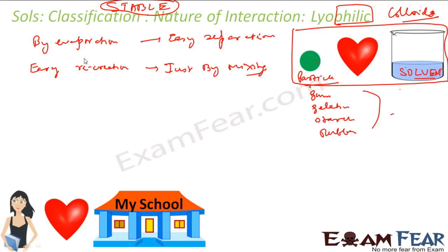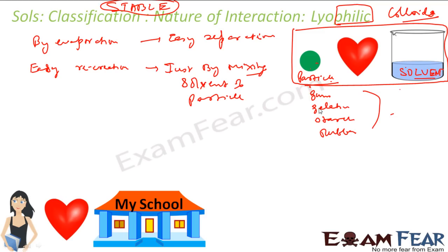Since they love each other so much, even if you separate them by evaporation, you can easily recreate the colloidal solution just by mixing. The particles stick to the solvent — they are very stable. Examples include gelatin in water, starch in water — you can easily get the colloidal solution back by simply mixing.